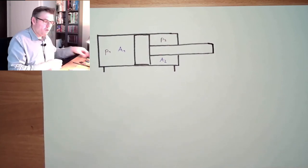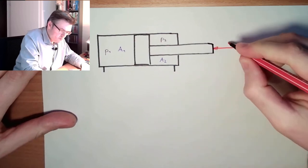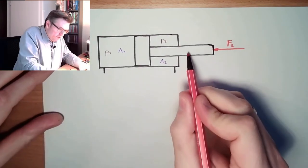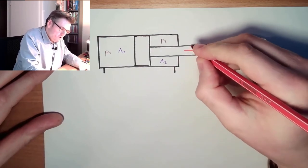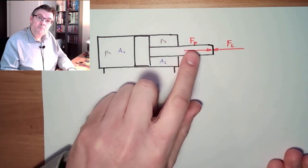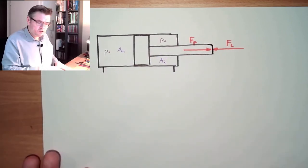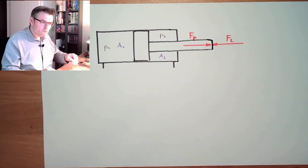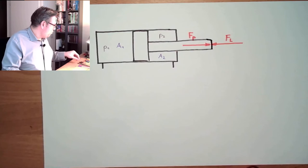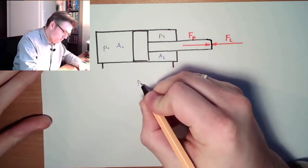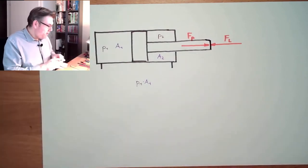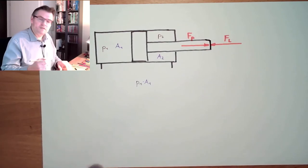Usually there is a force which we want to overcome — the load — which we want to move. Here is the force of our cylinder. If the force of the pressure is bigger than the force of the load, this will start to move in each direction. So how do we get to the force of the pressure? On this side we have pressure P1 at area A1 multiplied together, and we also have to consider mechanic-hydraulic efficiency.